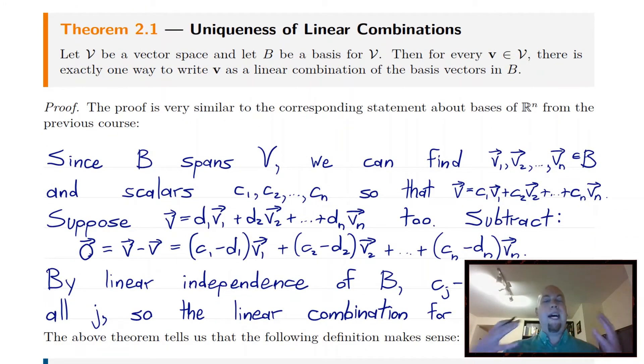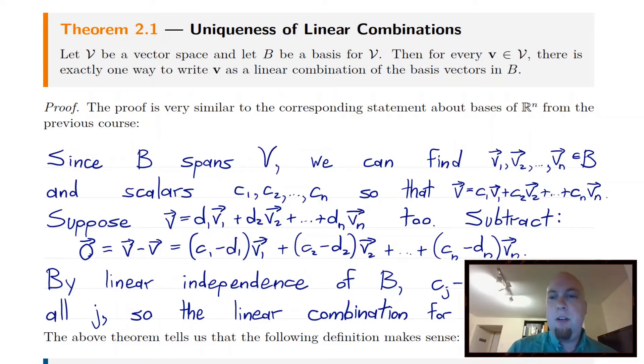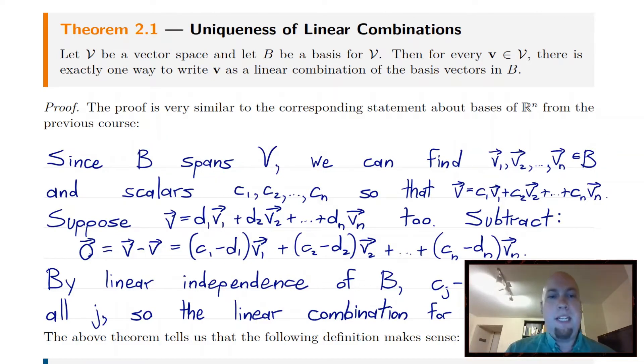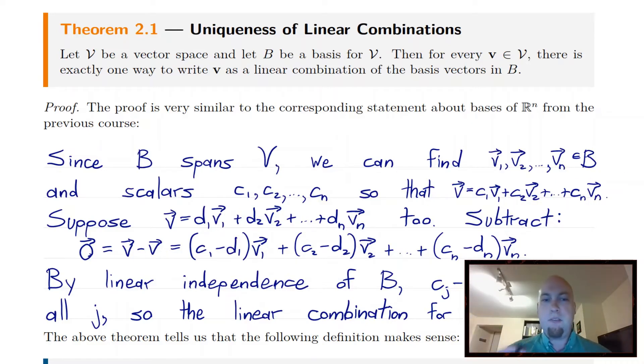So how do we prove this theorem? Well, since b spans v, we can find some vectors in b and some scalars such that v is a linear combination of things from b.